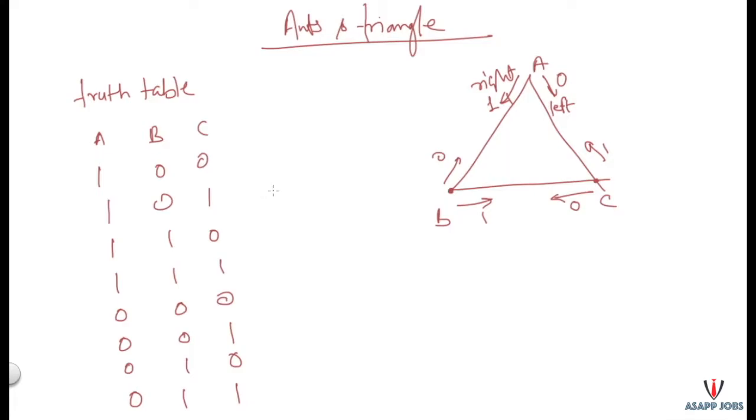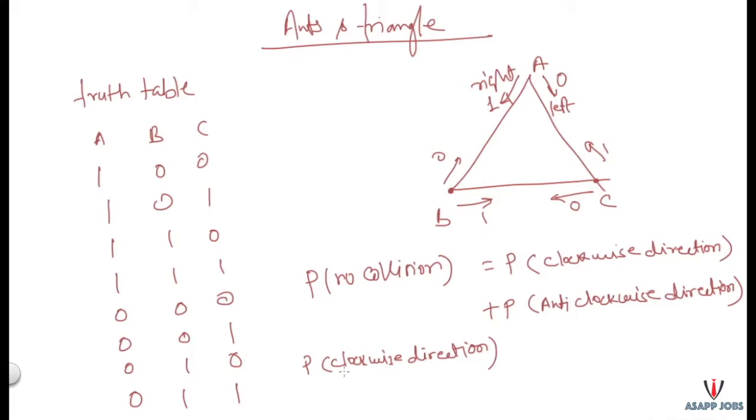Just like we know that when all the ants go clockwise or anti-clockwise direction, then there will be no collision. So the probability of no collision should be equal to the probability that all ants go clockwise direction plus the probability that all ants go anti-clockwise direction.